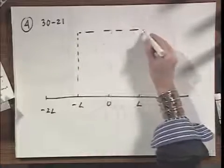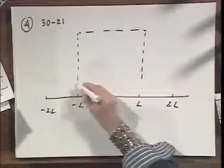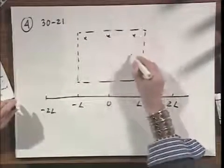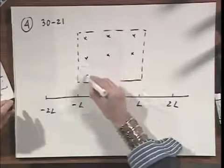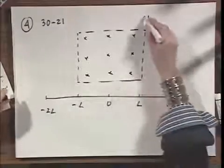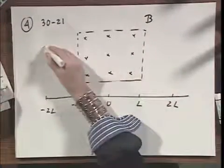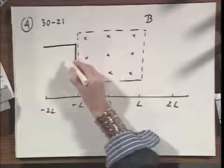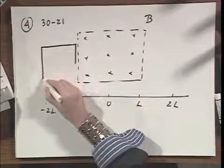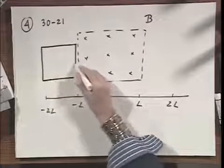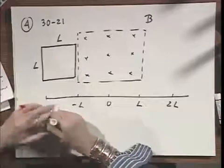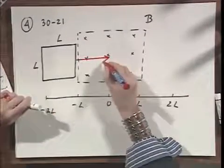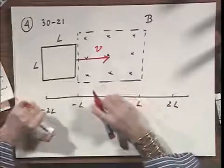I have an area 2L by 2L which has a magnetic field pointing in the paper and the magnetic field is constant in the paper. Here I have a loop which has sides capital L, and that loop is being moved by me with a certain velocity V, dragged into this magnetic field.